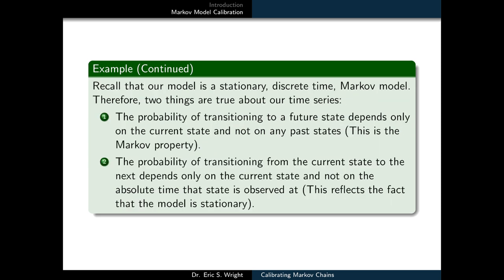Recall that our model is a stationary discrete time Markov model. Therefore, two things are true about our time series. The probability of transitioning to a future state depends only on the current state and not on any other past states. This is the Markov property.